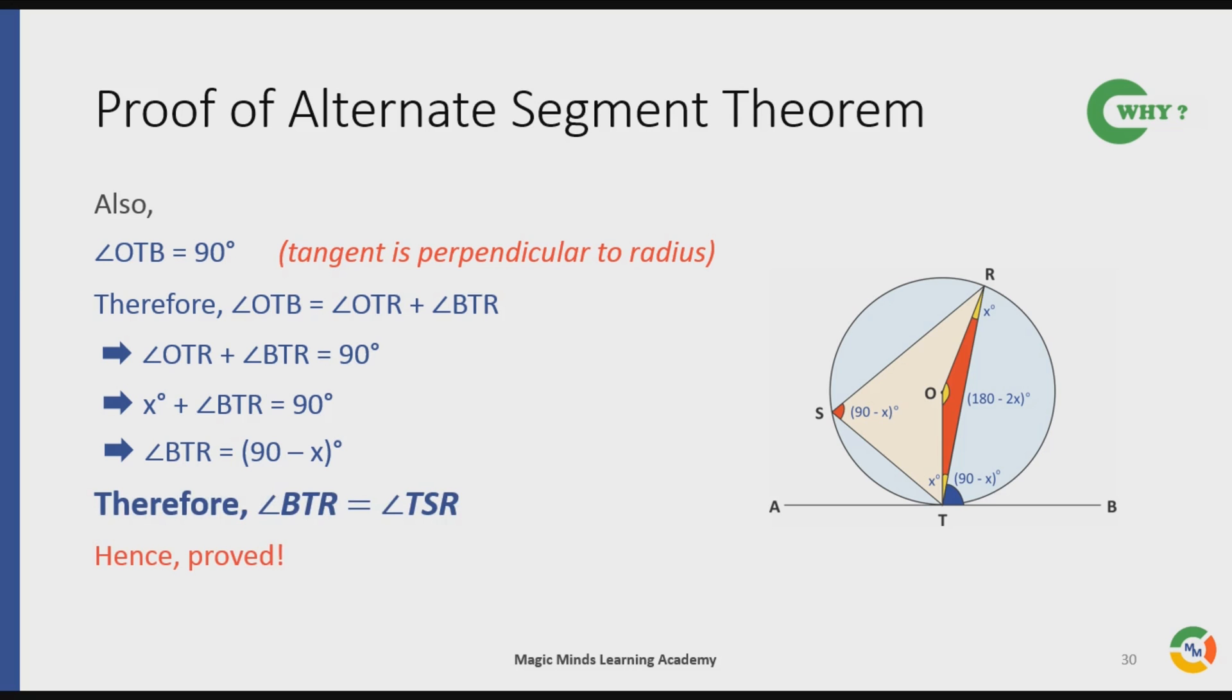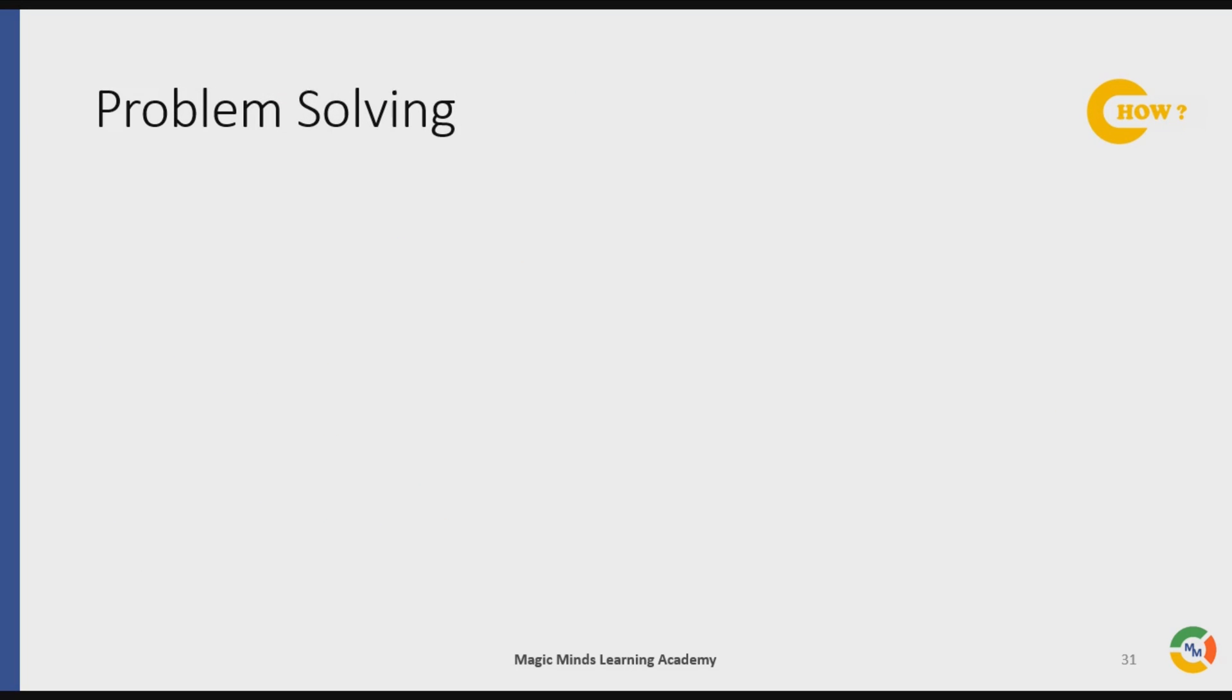Let us see the how part. That is, we will take up an example problem which can be solved using Alternate Segment Theorem, so that you can understand how we can use the theorem to solve problems on circles. So here is the problem.